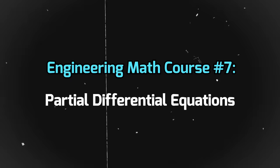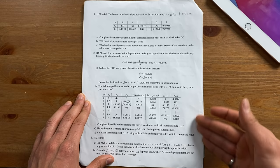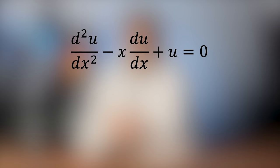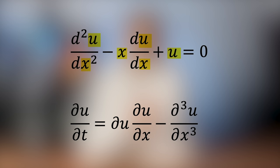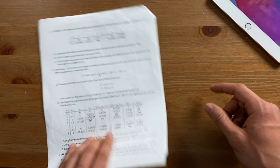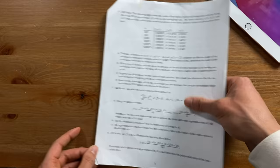Moving on, we have Partial Differential Equations, which isn't as common since not all engineering majors have to take it. It builds on the regular differential equations course: while normal differential equations deal with only two variables, partial differential equations deal with two or more variables. This course is very useful in heat transfer, making it most common among mechanical, electrical, and aerospace engineers.